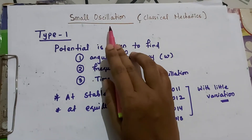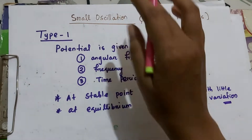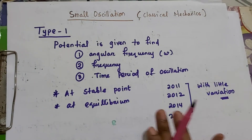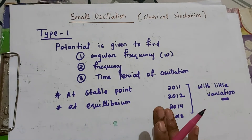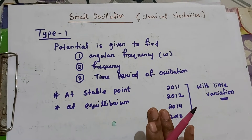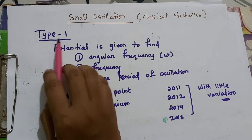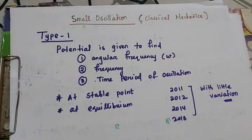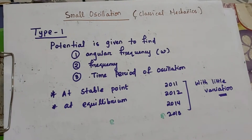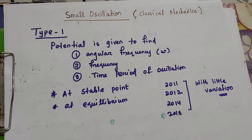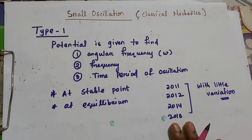Basically, I observed there are two types of questions you will get from the small oscillation part. The most important one is Type 1, which I will discuss today. Regarding Type 2, I will discuss it in one more lecture.